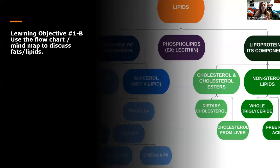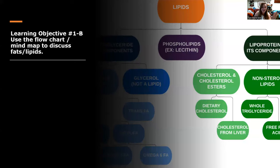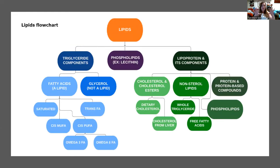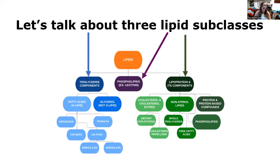We're going to use a flow chart or mind map to discuss the fats or lipids. When we look at this mind map, we want to know the chemical composition of each segment, the characteristics associated with each term, where each lipid is found — in food, in the body, or both — and any additional considerations. We'll be talking about three lipid subclasses: the triglyceride and its components, the phospholipids, and lipoproteins and their components.